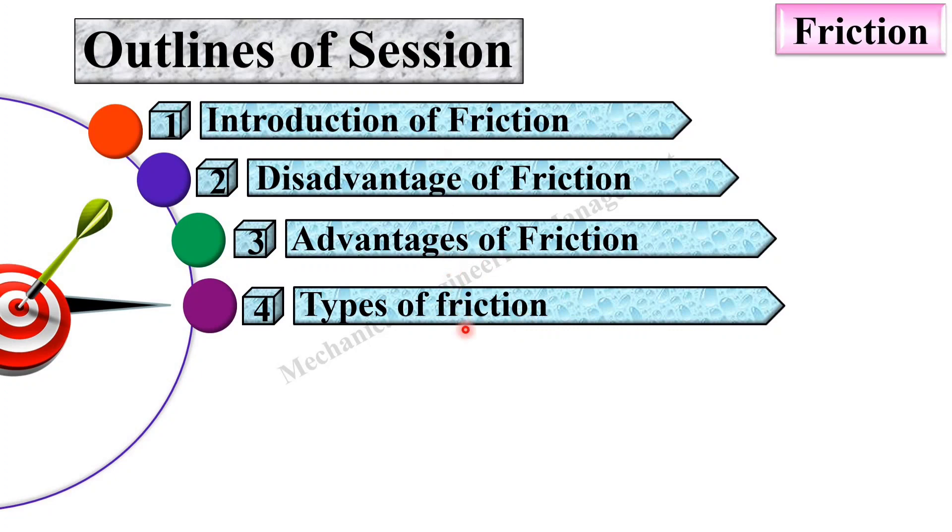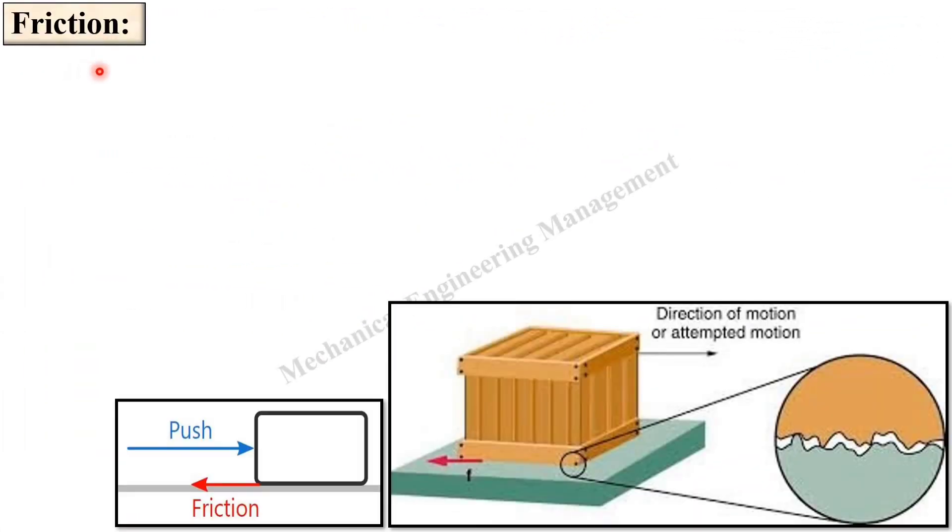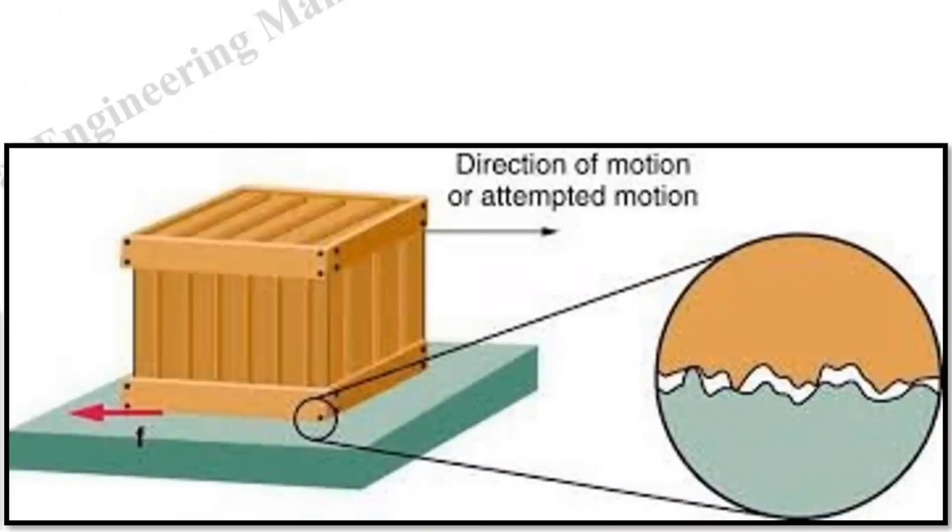Let us see one by one all this topic briefly. First, let us see what is friction. It has been established since long that the surfaces here you can see of the bodies are never perfectly smooth. Here you can see this is the surface of the body but if you see from the microscopic point of view then you can see it is like this. In short, surfaces of the bodies are never perfectly smooth.